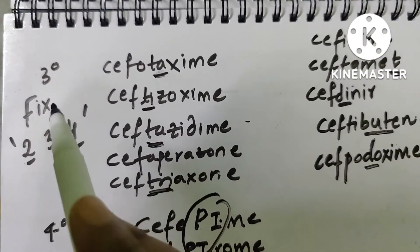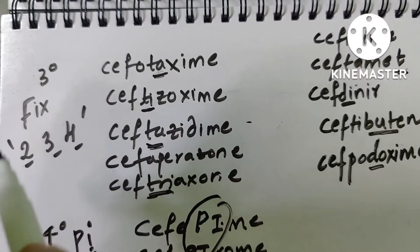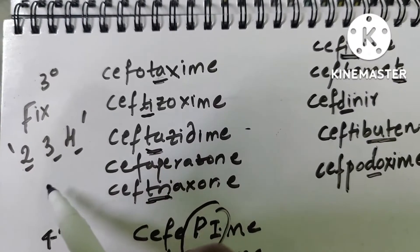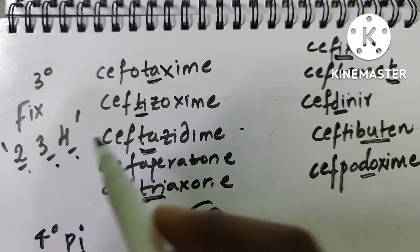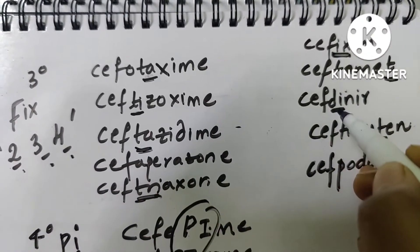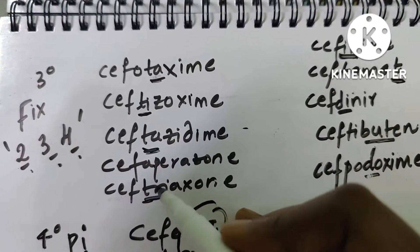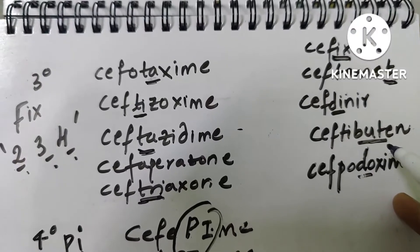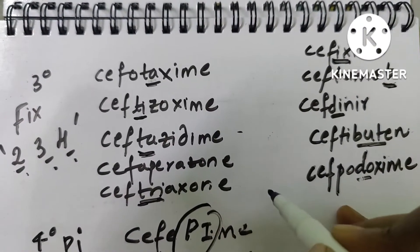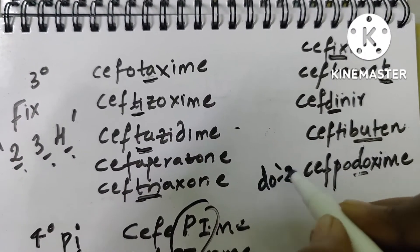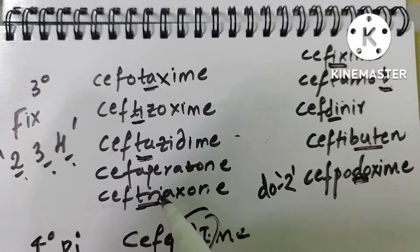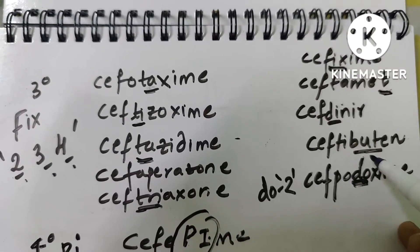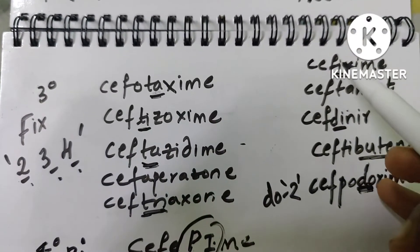The leftover one is third generation. In the third generation you need to remember 'fix' the numbers - you have to fix the numbers 2, 3, and 4. Fix is cefixime. You have cefdinir - dinir meaning two, three meaning tri - ceftriaxone, and four is buta - ceftibuten. And 'dai' means two in Hindi, so cefpodoxime. Number two is dinir, dai, and do; number three is tri; number four is buta. So you have fixed numbers.